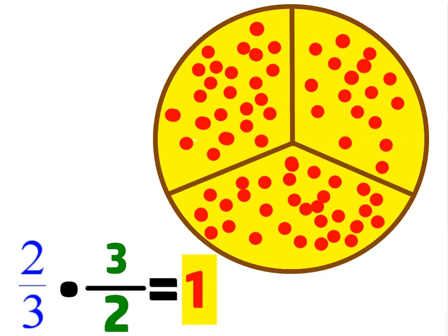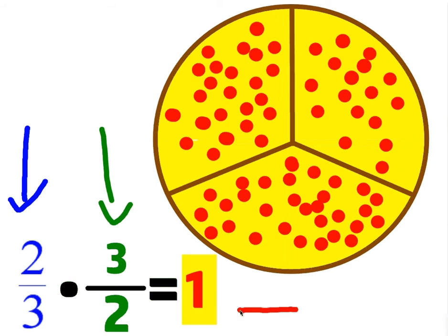The gist of this lesson is: if I start with a fraction, what number must I multiply by to end up with the number 1? We're talking about any fraction. I'm going to show you how this works.